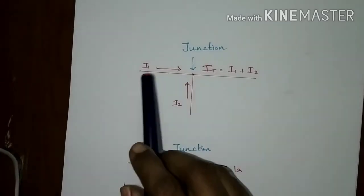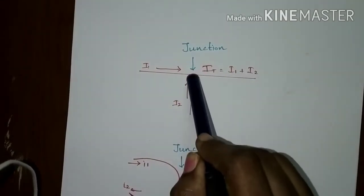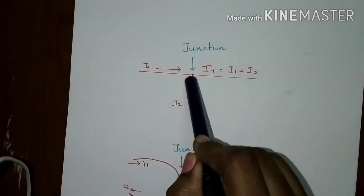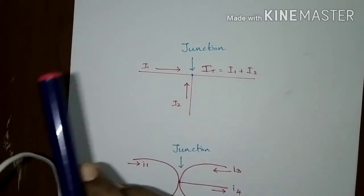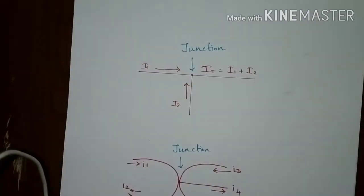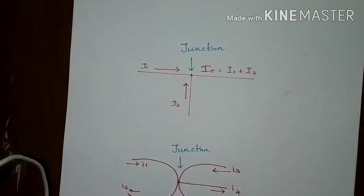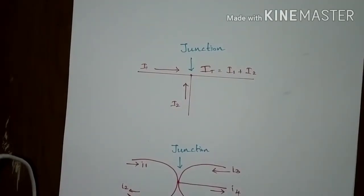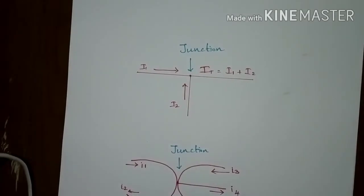In this figure, three branches of elements are connected to a point, and that point is termed as a junction or node. This node is a principal node. If more than three elements are connected at a node, that node is termed as a principal node.